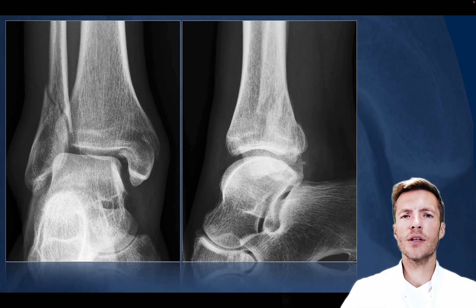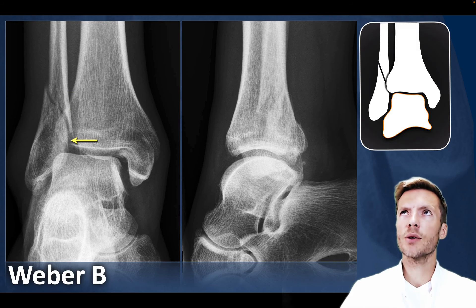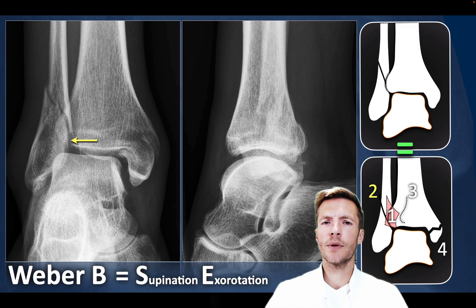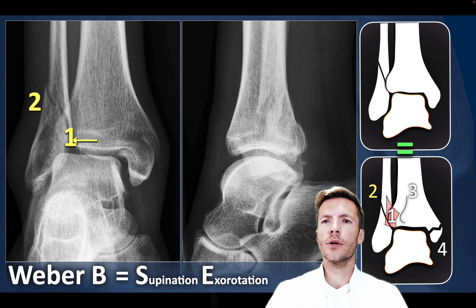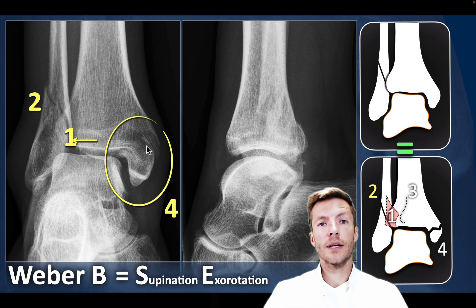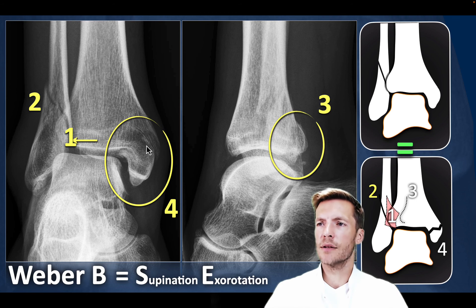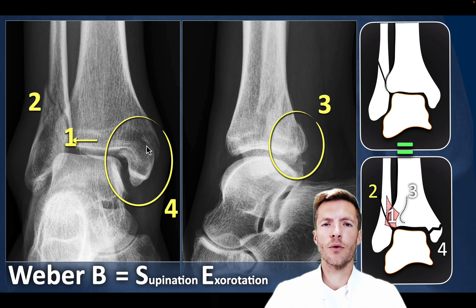Next case: we see a clear fracture of the distal fibula at the level of the syndesmosis — a Weber B fracture, corresponding to a supination axial rotation injury. In the Lauge-Hansen classification, the fibular fracture represents grade 2, so we know the anterior syndesmosis is injured. Looking at higher grades, we can also see a fracture through the medial malleolus, which is grade 4 — meaning the malleolus tertius or posterior malleolus is injured, and indeed we can clearly see that fracture. So this is a supination axial rotation grade 4 injury.